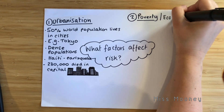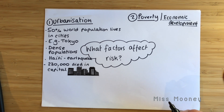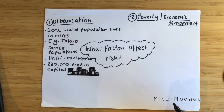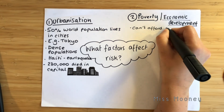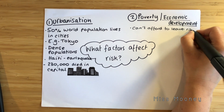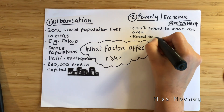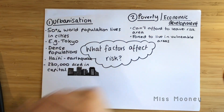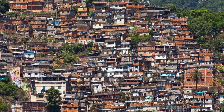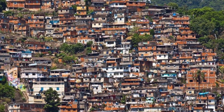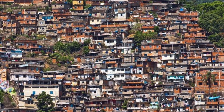The second risk factor is poverty or uneven development. In poorer areas of the world — LICs, or low income countries, and NEEs, newly emerging economies — people are forced to live in areas where they are at risk because they can't afford to leave. Alternatively, there is a shortage of affordable housing, leading people to build on unstable land such as slopes prone to flooding and landslides. An example of this is the favelas in Rio de Janeiro, Brazil, which are very prone to landslides and extremely densely populated, meaning a huge number of people can be affected.